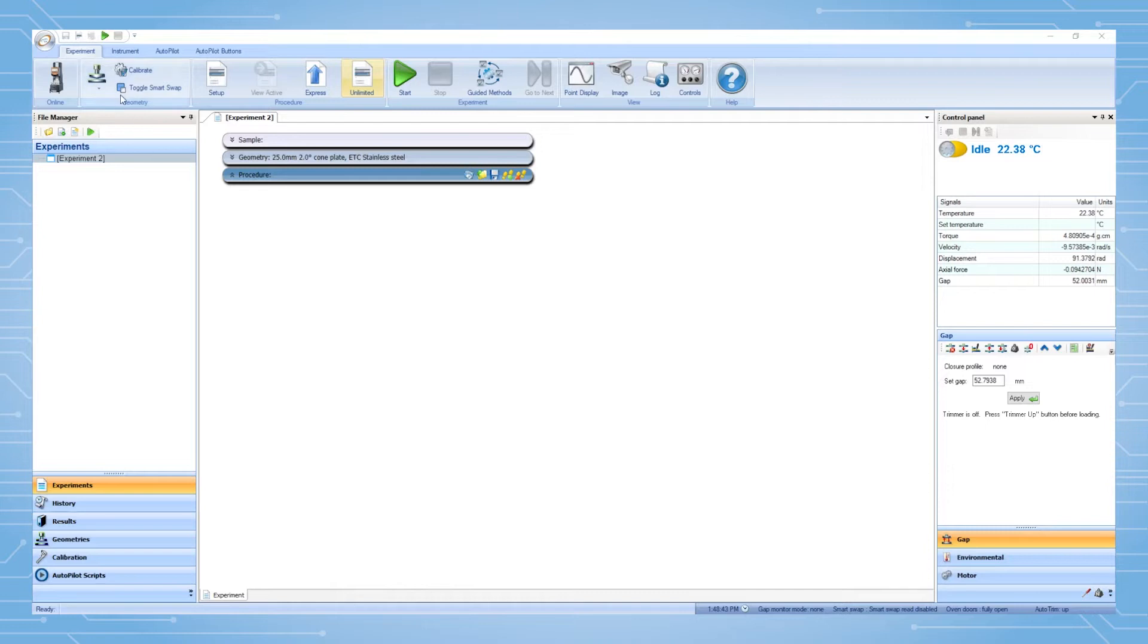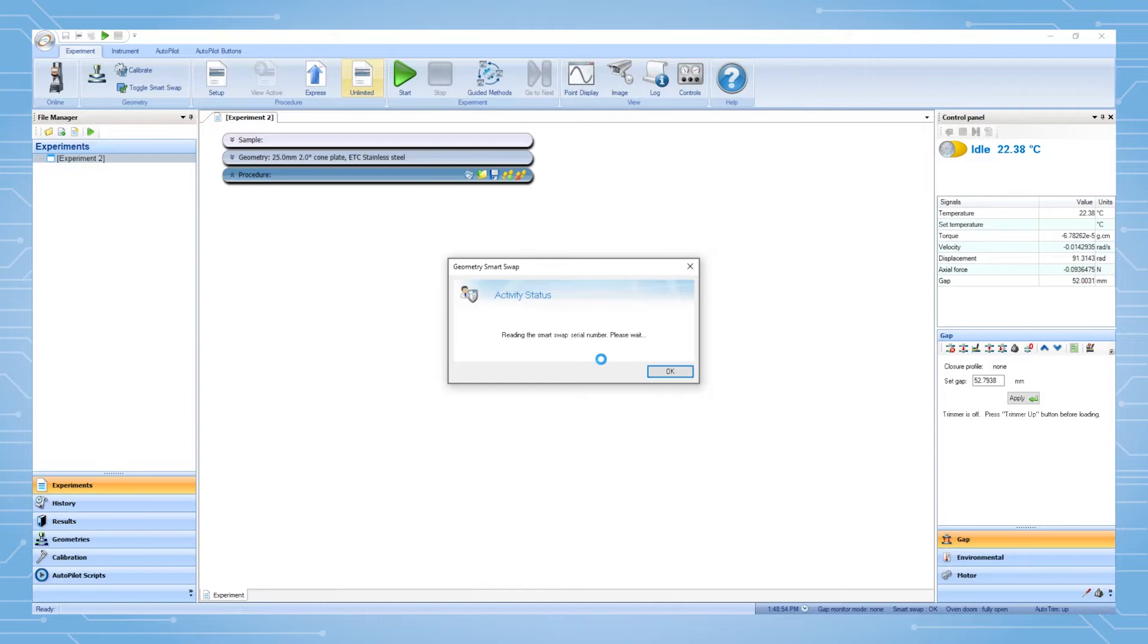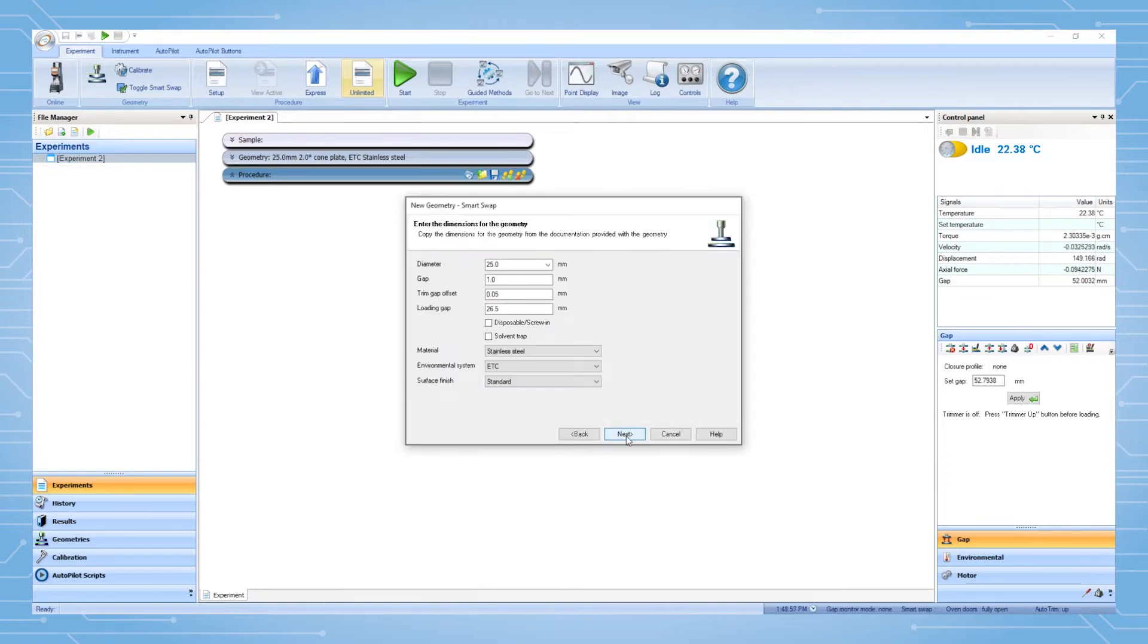With smart swap enabled and showing a green check mark, the geometry label is red and the new geometry wizard starts automatically. Review the parameters and click next, and finally click finish.